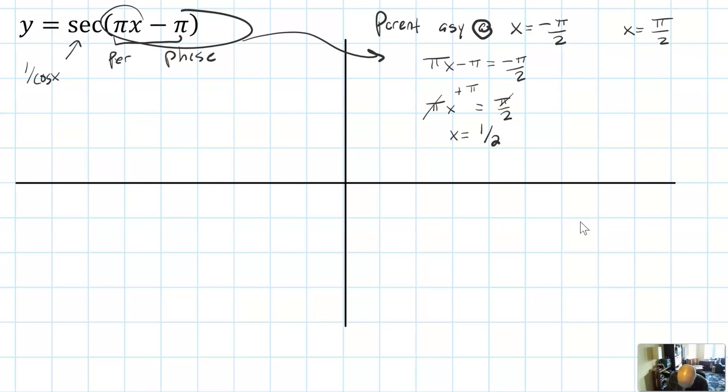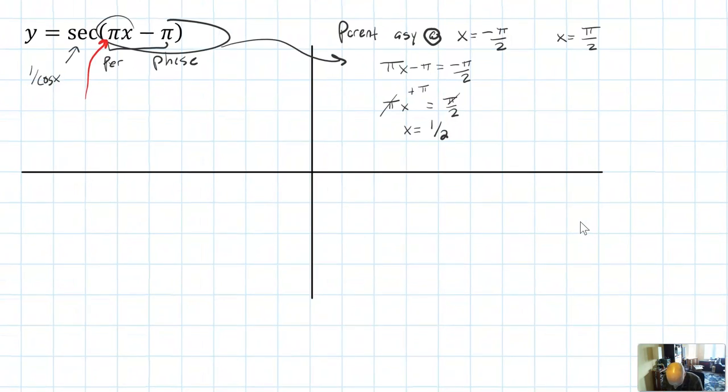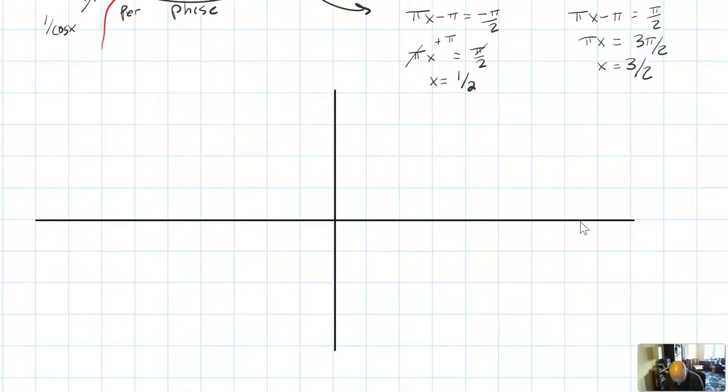It happens whenever you have a π on the x. It means that your graph is going to be scaled, not on the π values. It's just going to be scaled on integer values. They're still radians. They just happen to be integer radians, not π radians.